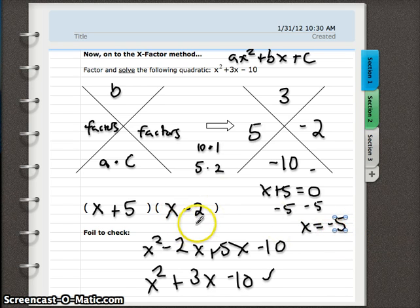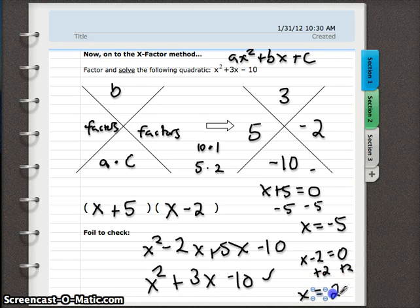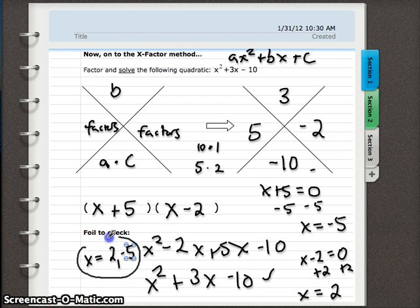We also set x minus 2, the second set of parentheses, equal to 0 and solve for x. Well, to solve for x, we add 2 to both sides and we get x is positive 2. So x has two answers. It has a negative 5 and it has a positive 2. So x equals 2 and negative 5. So that is what x equals. We just solved for x using a quadratic and we used the X factor technique to do it.